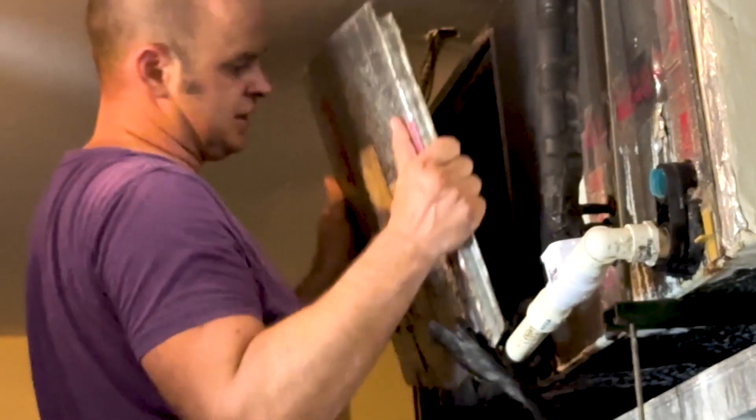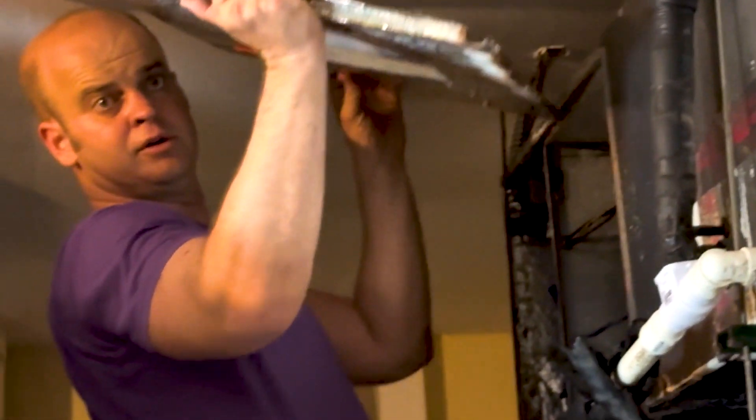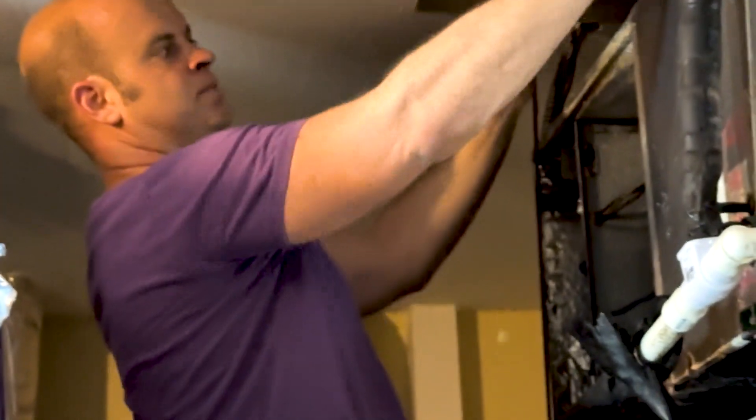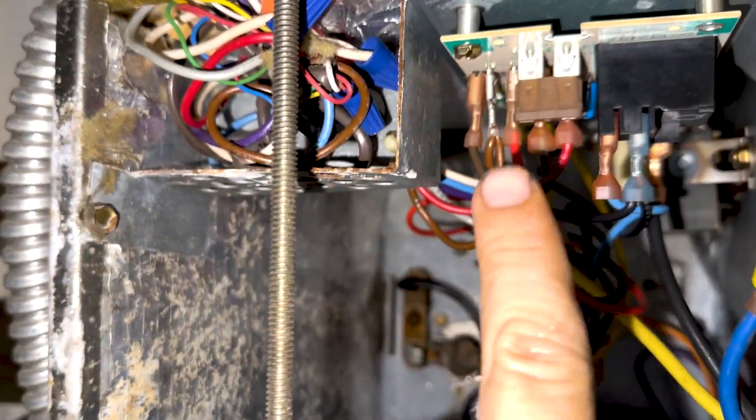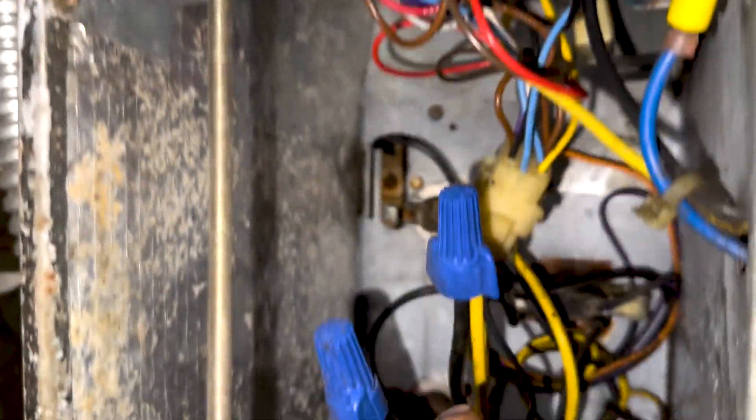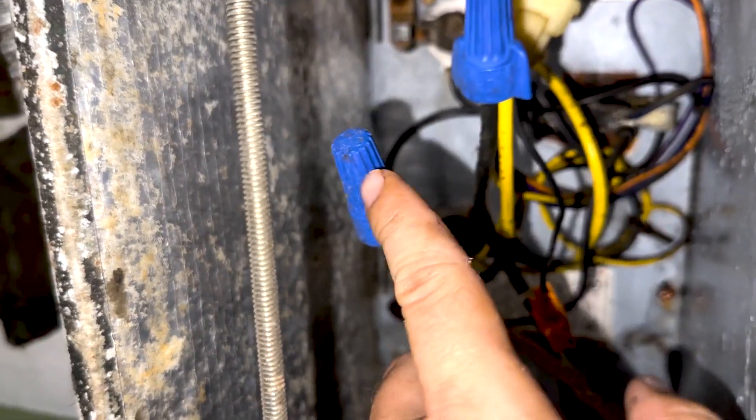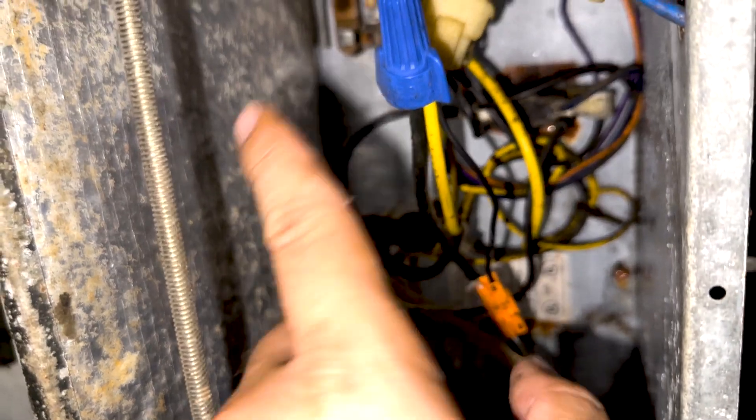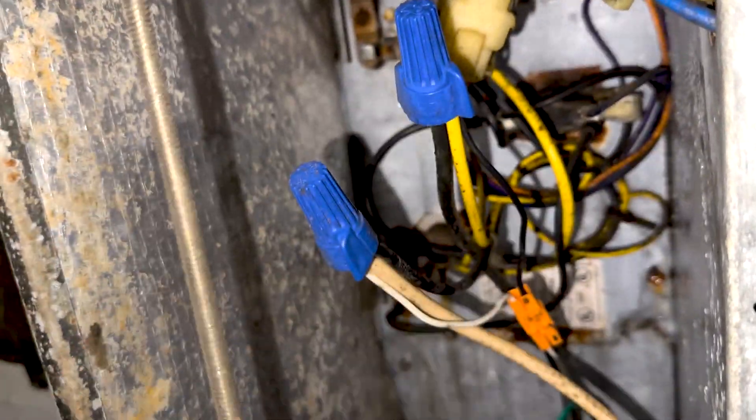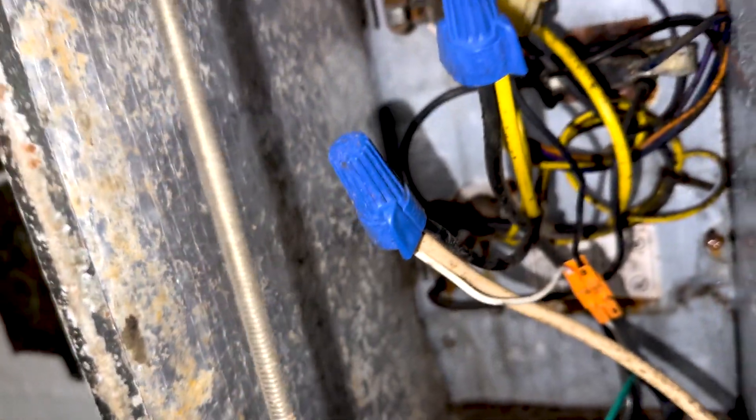All right, so our panel, we're going to move that up here. All right, so we're inside our air handler right here. We got a board, a computer board up here. We got our main power coming in right here. This is 240 volts. Do not mess with that. Power is off. This is our low voltage wiring.